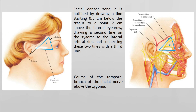Here is the presentation of facial danger zone 2. It is outlined by drawing a line starting 0.5 cm below the tragus to 0.2 cm above the lateral eyebrow, a second line on the zygoma to the lateral orbital rim, and finally connecting these two lines with a third line. This zone shows the course of the temporal branch of the facial nerve above the zygoma.